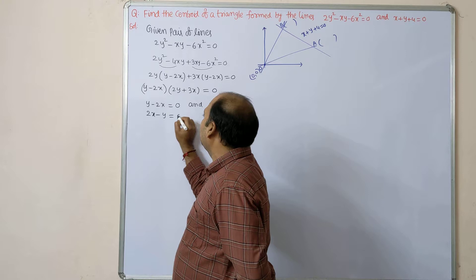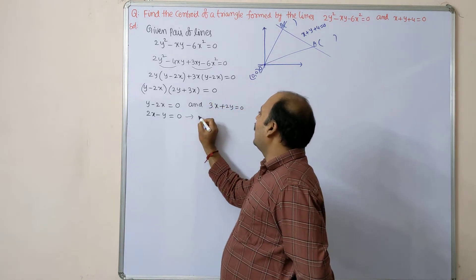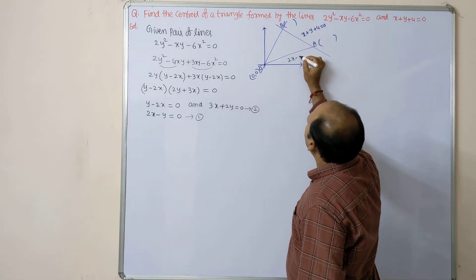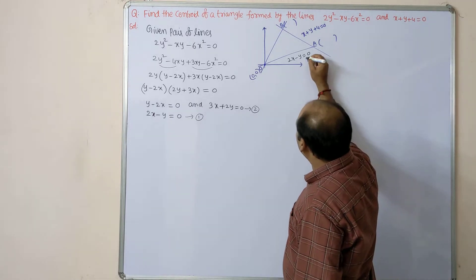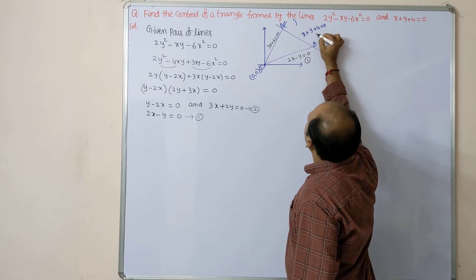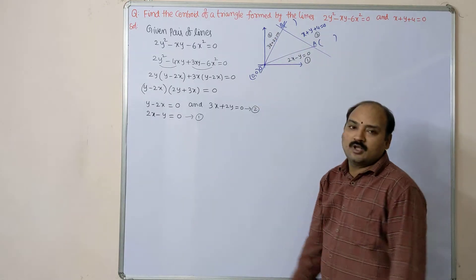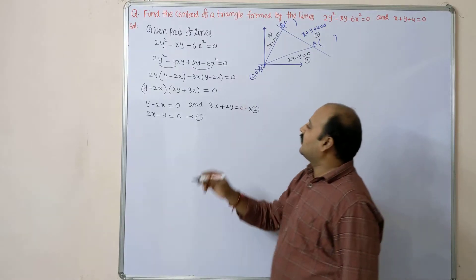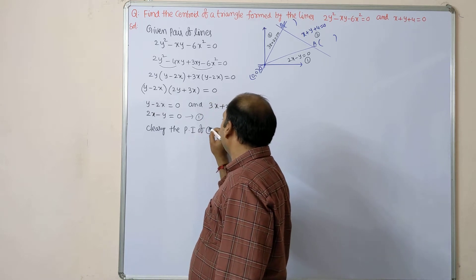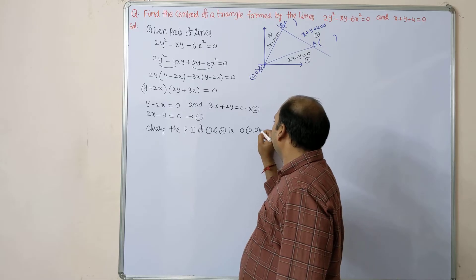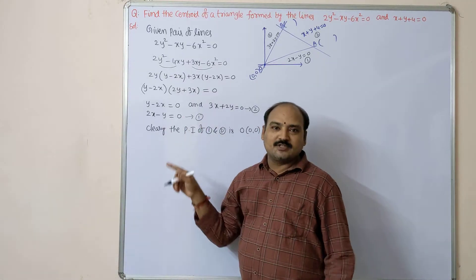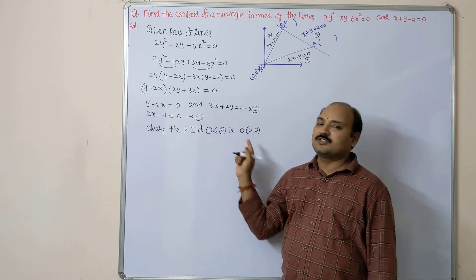Multiplying y - 2x = 0 by -1 we get 2x - y = 0 — call this equation 1. And 3x + 2y = 0 is equation 2. The third line x + y + 4 = 0 is equation 3. Solving equations 1 and 2: since there is no constant term, the point of intersection is clearly the origin. No need to solve — directly it goes to the origin.